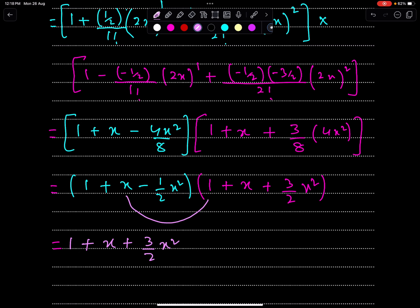Now multiply x with this and this only. Don't multiply this x with this because you will get x cubed which is not required. So, x plus x squared. And multiply this minus 1/2 x squared with this term only, because we need terms till x squared. If you multiply this minus 1/2 x squared with this, you will get x cubed which is not required.